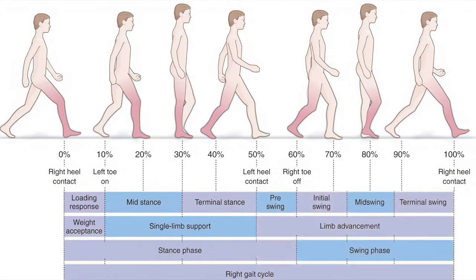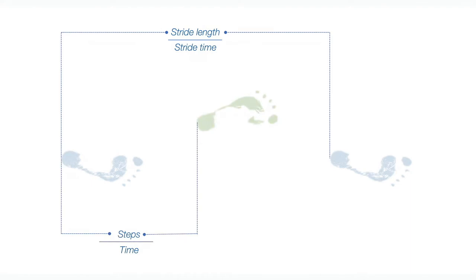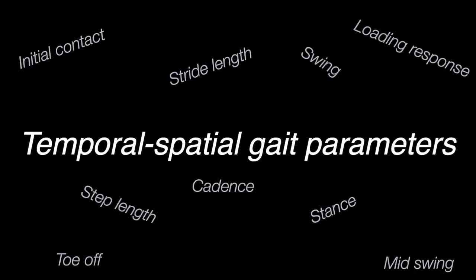Swing is defined as the period from toe off of the foot to initial contact and is made up of initial swing, mid swing and terminal swing sub-phases. Step length is the distance from initial contact of one foot to the next initial contact event of the contralateral foot, whereas stride length is the distance from initial contact of one foot to the next initial contact event of the same foot. Gait velocity is the stride length divided by stride time, and cadence is the number of steps per unit of time. All of these — cadence, stride length, step length, step time, stride time, stance, swing — are temporal spatial gait parameters.